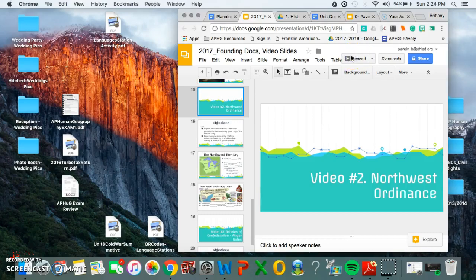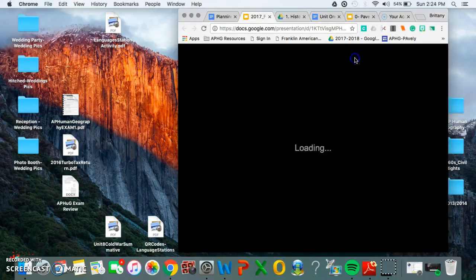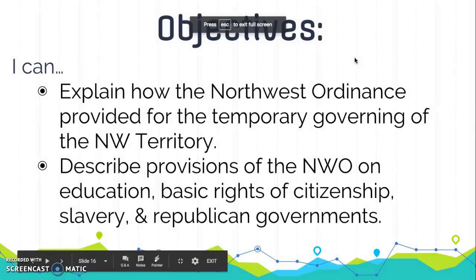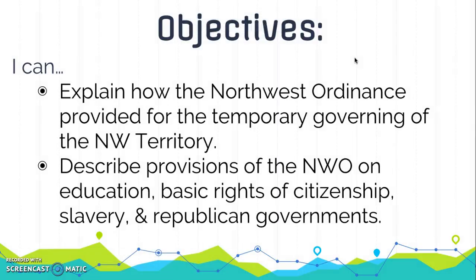Hello folks. In this video we are talking about the Northwest Ordinance. Your objectives are to explain how the Northwest Ordinance provided for the temporary governing of the Northwest Territory, and describe the provisions or laws of the Northwest Ordinance on education, rights of citizenship, slavery, and Republican government.